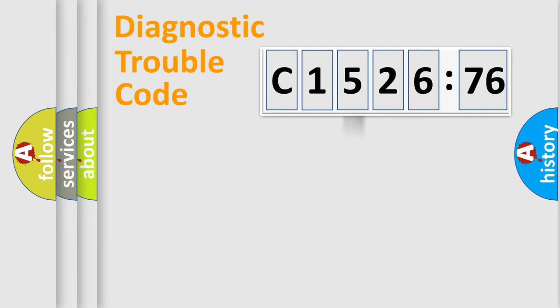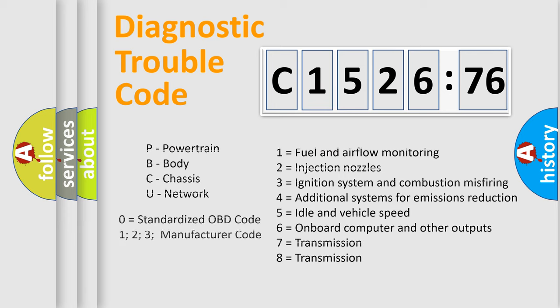The third character specifies a subset of errors. The distribution shown is valid only for the standardized DTC code. Only the last two characters define the specific fault of the group.